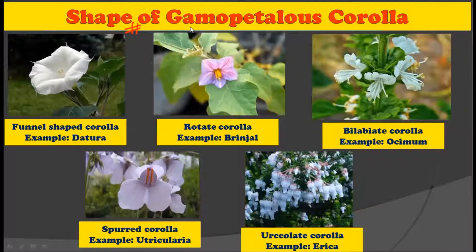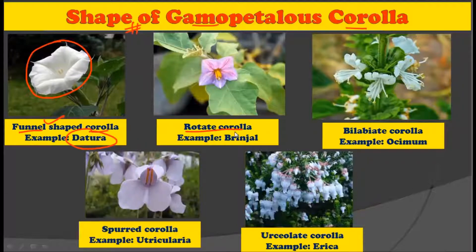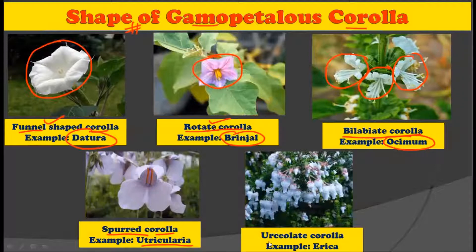Now let us see the different shapes found in gamopetalous corolla. The funnel-shaped corolla is found in Datura, where the corolla forms a funnel-like structure. The rotate corolla is found in brinjal, as seen in the picture. Then there is the bilabiate corolla found in Ocimum plants, the spurred corolla found in Utricularia, and the urticulate corolla found in Erica. All these types show very unique structures and shapes found in different plants.